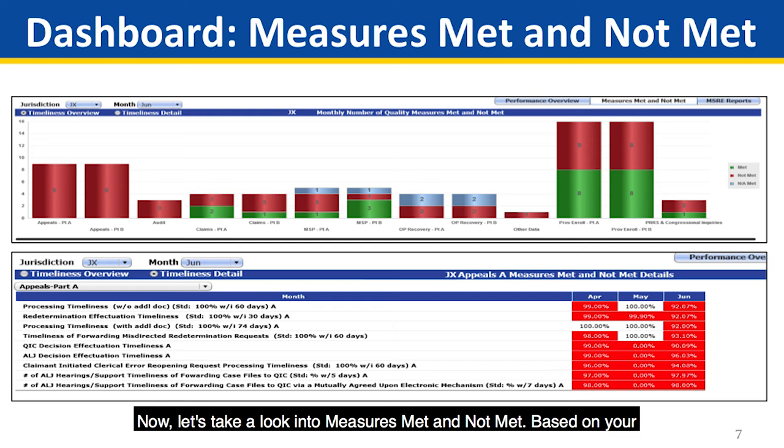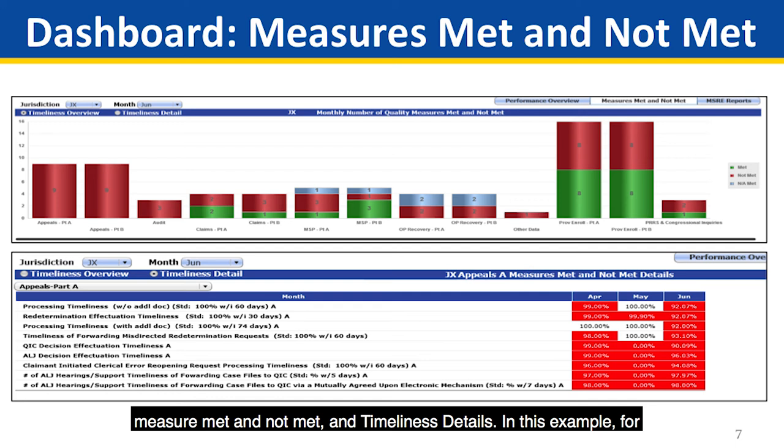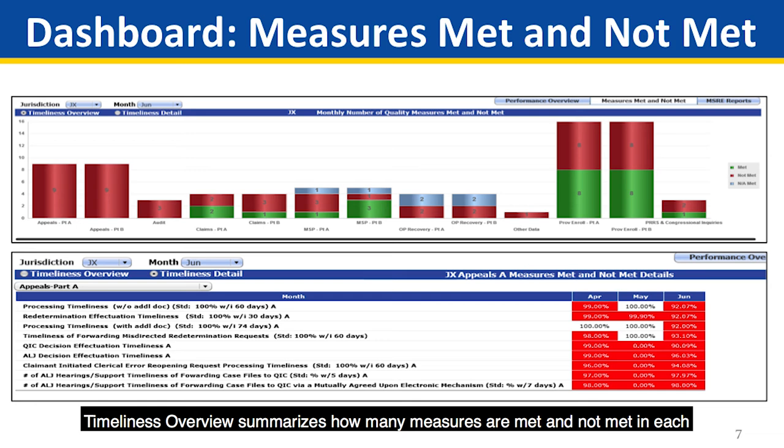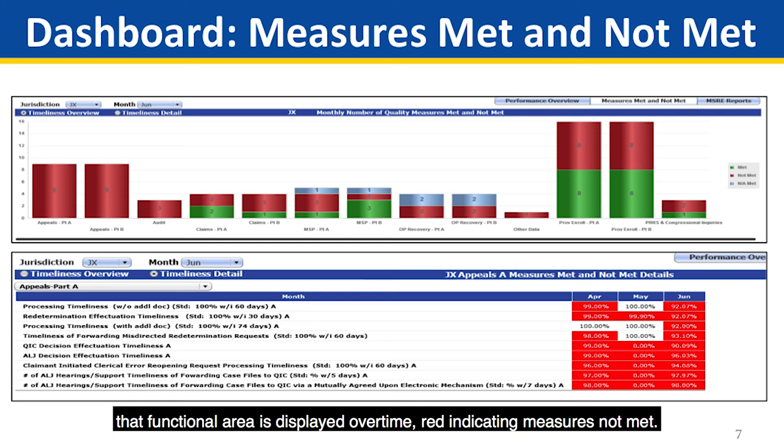Now let's take a look into Measures Met and Not Met. Based on your jurisdiction, you can see the Timeliness Overview of Business Functions for Measures Met and Not Met and Timeliness Details. In this example, for Jurisdiction X, you can view the metrics for a specific business function. Timeliness Overview summarizes how many measures are met and not met in each functional area for the selected month. In Timeliness Detail, every measure in that functional area is displayed over time, with red indicating measures not met.